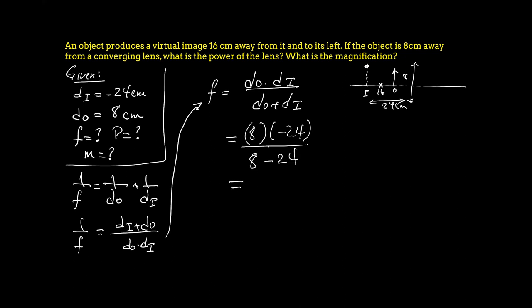So here's 8. Here's negative 24. 8 minus 24 is negative 16. So we can cancel, maybe divide this by that, and get a 2 here and a 1, and this, and that will give me a 12, a 2, the minus is canceled. So all I'm left with is a plus 12, 12 centimeters. So the focal length is 12 centimeters. So this is great.